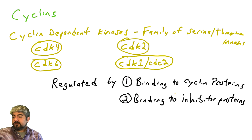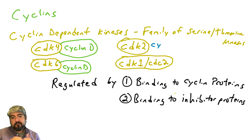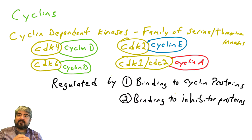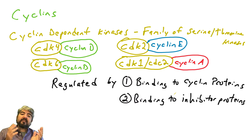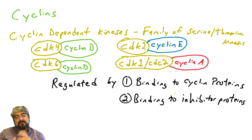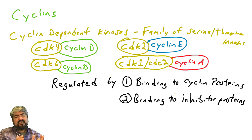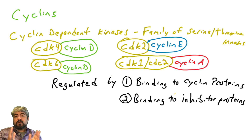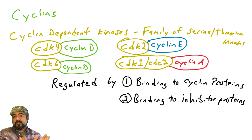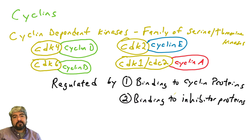Let's introduce some cyclins. There are cyclin-D, cyclin-E, cyclin-A, and cyclin-B, among many others. We're going to focus mostly on cyclin-D and cyclin-E, because those are the main regulators of cell cycle progression — especially the G1 to S transition — and the ones that are commonly mutated in human cancers.